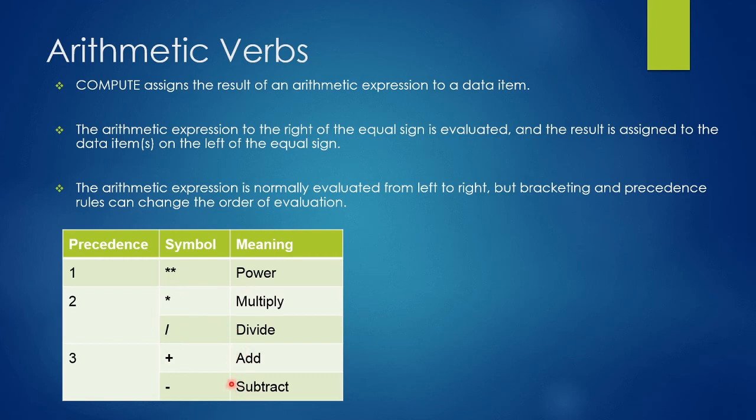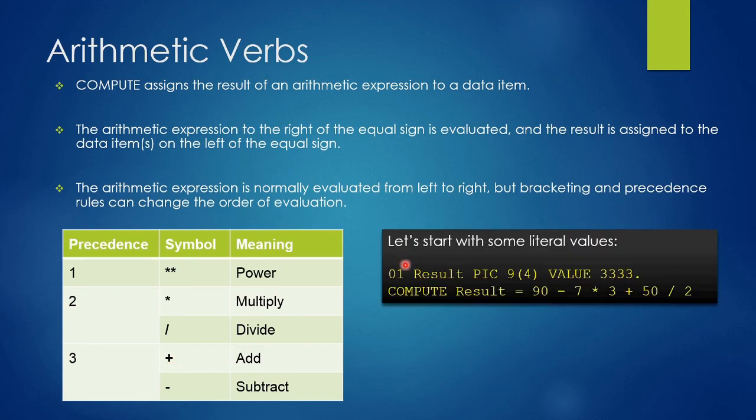Now let's understand with the help of some literal values. We have defined a variable name result with PIC 9(4) and initialized it with a value of 3333. Now we are executing the arithmetic expression and we are going to give the result to the result variable. To do so, we first write the COMPUTE keyword followed by the variable name, which in this case is result, followed by equal to sign and then the arithmetic expression.